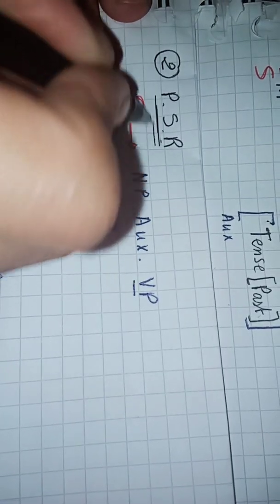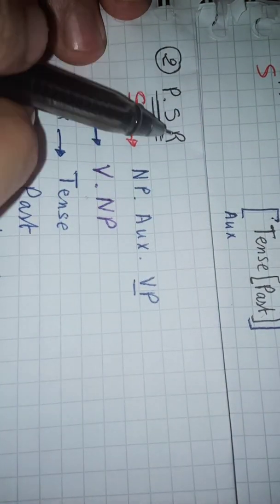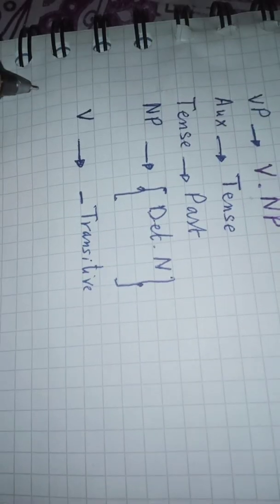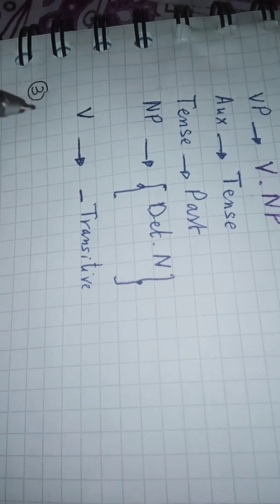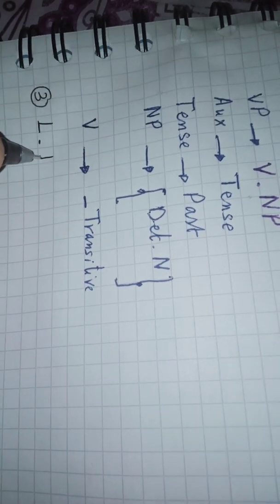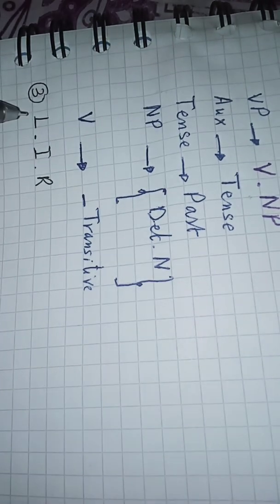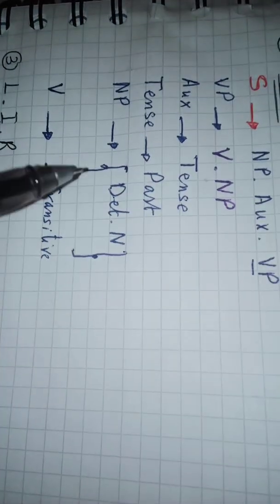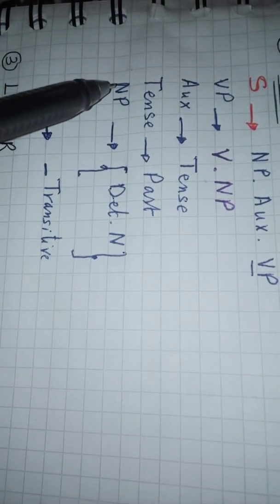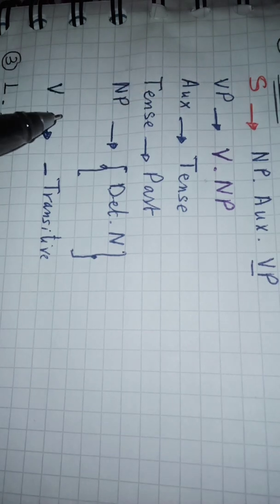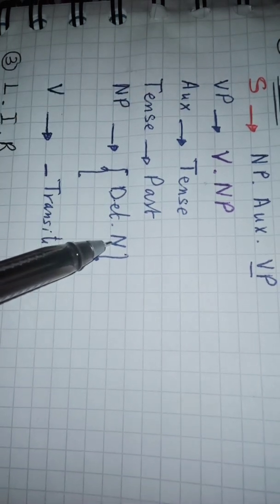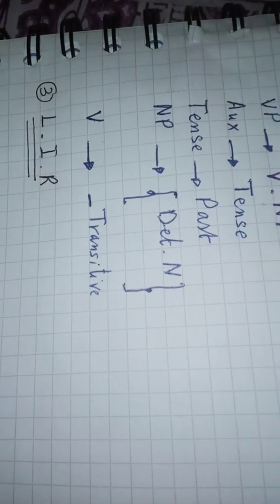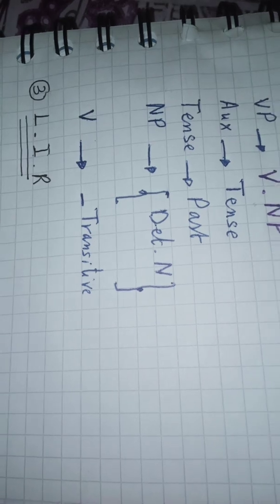Now let's move to the third step. The third step is lexical insertion rule, in which we are going to mention the nature of each of those lexical words: the verb, the determiner, the noun and so on. It is like mentioning our parts of speech which we have in this sentence.